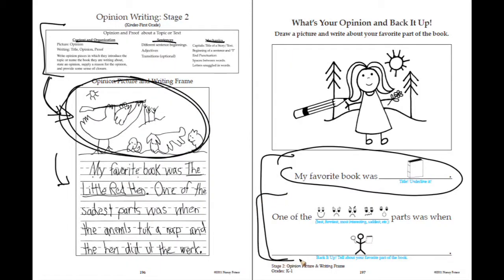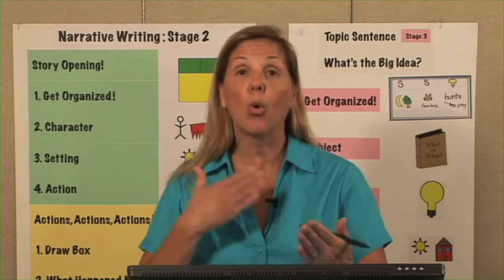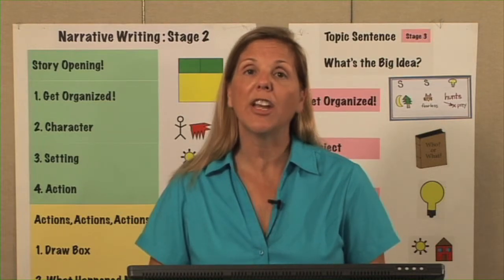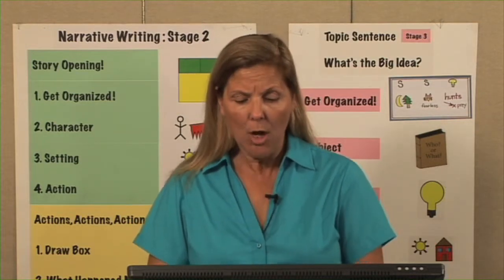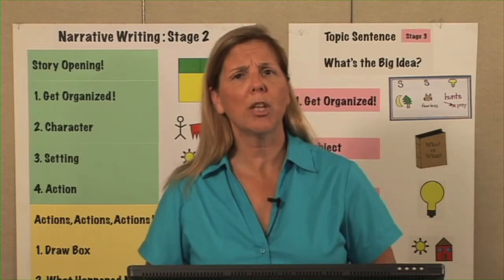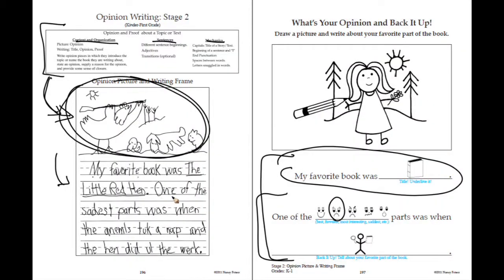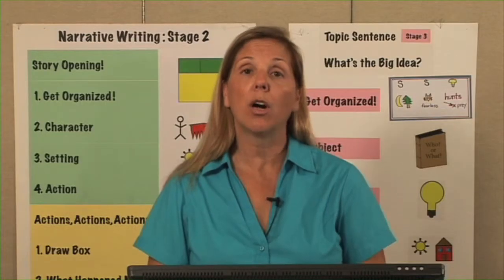Now I plan my next sentence. What emotion, what is my opinion about this book? I'm saying it has many sad parts. I orally rehearse: 'One of the saddest parts was when...' — look at my evidence. The little red hen was doing all the work while the other animals slept. 'One of the saddest parts was when the little red hen was doing all the work and the other animals slept.' I orally rehearse and then write it out. There's our opinion for stage two.